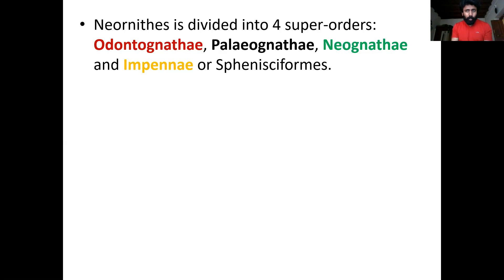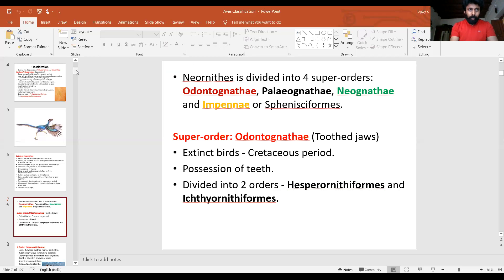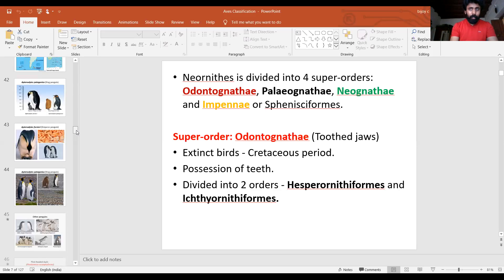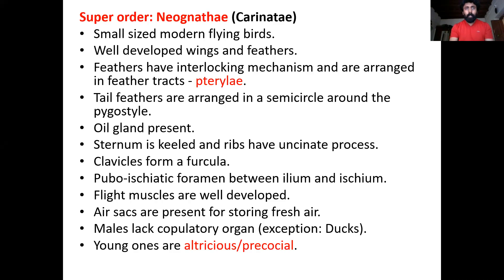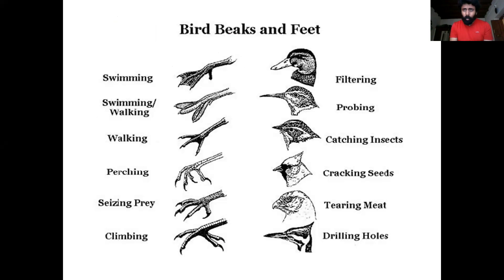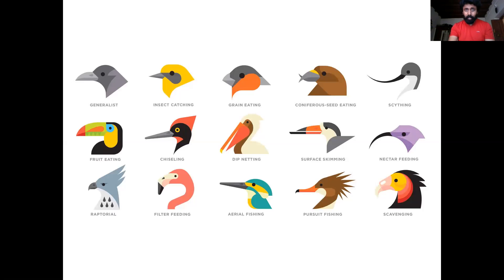Neognathae, or the new birds — let us move further into the Neognathae birds and their orders. The super order Neognathae, also called Carinati, has very different salient features from the Palaeognathae or flightless birds. While discussing different orders, you will come across different sorts of beaks and feet. Here you can see different sorts of beaks.